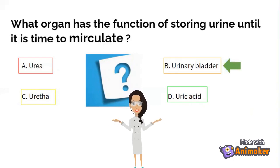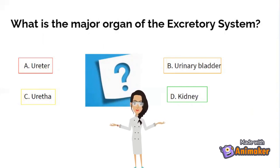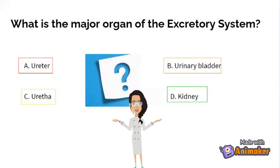What is the major organ of the excretory system? A: the ureter, B: the urinary bladder, C: the urethra, and D: the kidney. Did you get the correct answer? It is the kidneys.